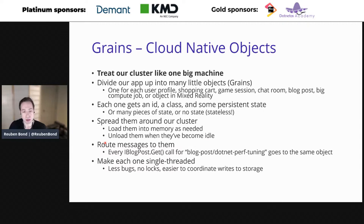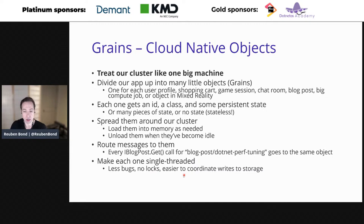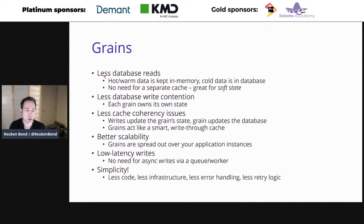The important part is that Orleans ensures any method calls made against these grains get routed to that instance. If you have a grain reference representing a particular blog post, any calls you make against that reference always go to the same instance. Orleans makes grains single-threaded — you get fewer bugs, don't need locks, and writing to storage is easier to coordinate. The benefits include reducing database reads because grains can cache hot data in memory, and you don't need a separate cache like Redis.